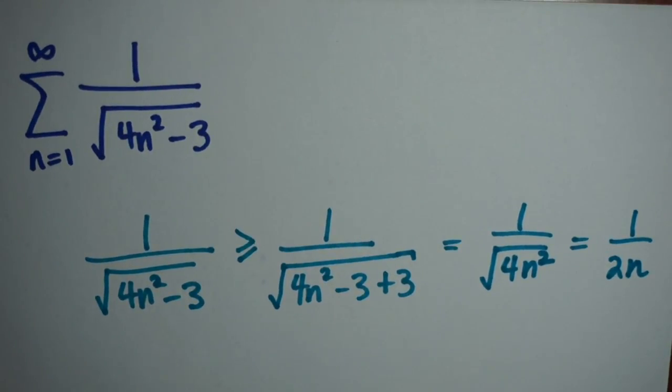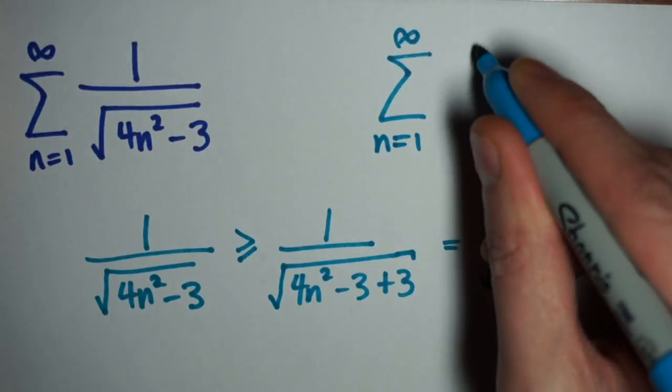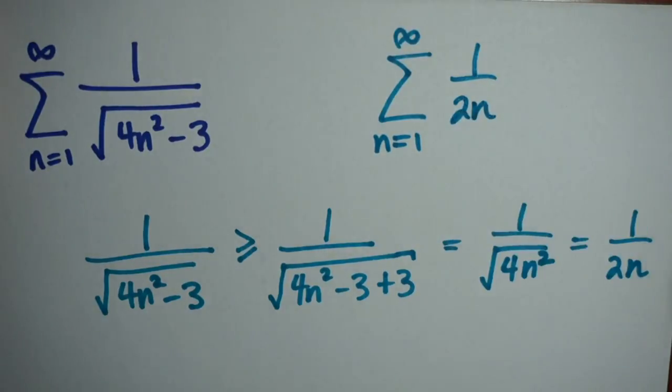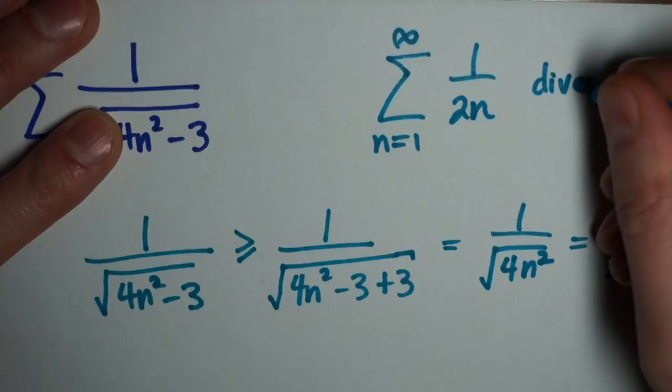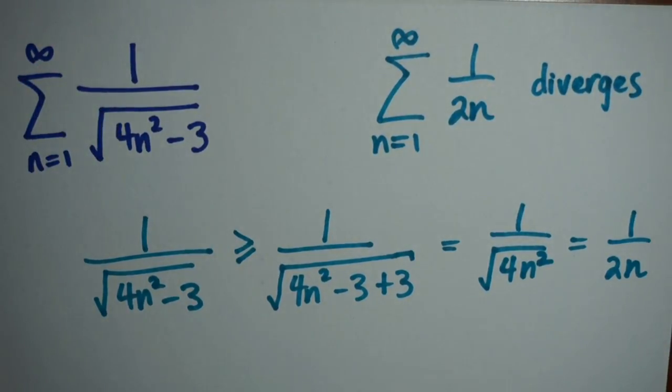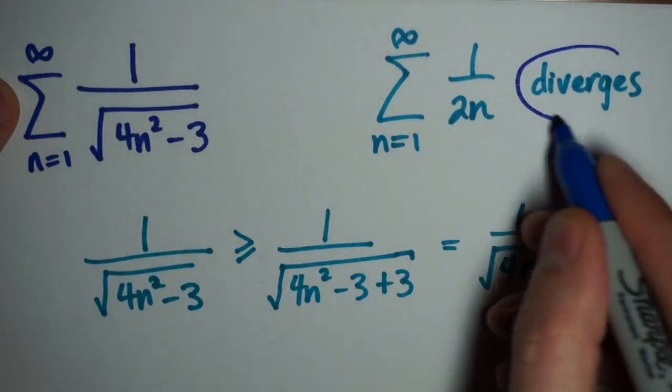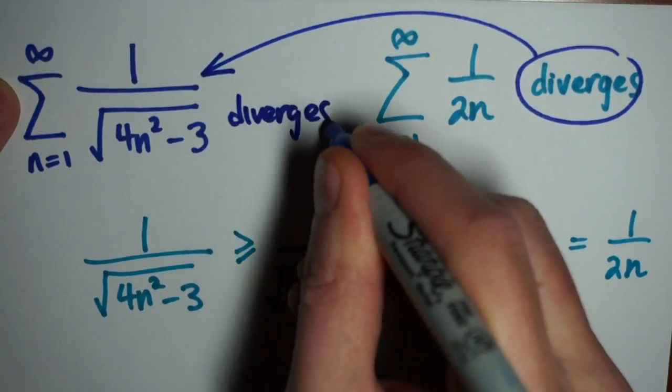So knowing that the series 1 over 2n has a particular behavior tells me that this series is going to have that same behavior. In particular, because 1 over 2n diverges, the series I started with also diverges because it's bigger. If 1 over 2n converged, that wouldn't tell me anything about the larger series. But the divergence of the smaller series tells me that this larger series also diverges.